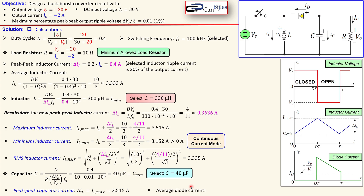Another important parameter is the average diode current, which equals the negative of the load current. This is because the average capacitor current is zero by definition — the DC current through a capacitor is zero. Therefore the average diode current must be the negative of the load current, giving 2 amps for the diode current since the load current is minus 2 amps.